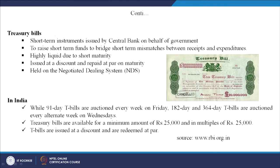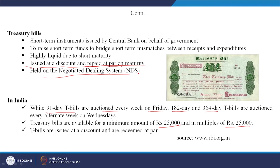The treasury bill is a short-term instrument issued by the central bank on behalf of the government, used to raise short-term funds to bridge short-term mismatches between receipts and expenditure. It is highly liquid due to its short maturity, issued at a discount and repaid at par on maturity. In India, 91-day treasury bills are auctioned every week on Fridays; 182-day and 364-day treasury bills are auctioned every alternate week on Wednesdays. Treasury bills are available for a minimum of rupees 25,000 and in multiples of that.